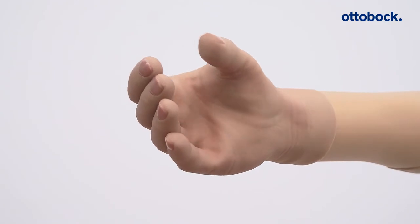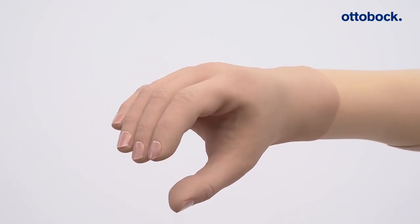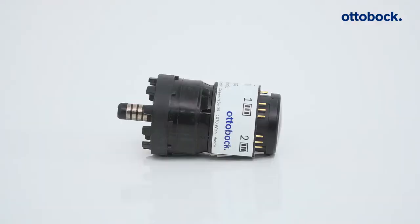For all Myo Bock hands, the active pronation and supination can be controlled by the Myo Axon electronic in combination with the electric wrist rotator.